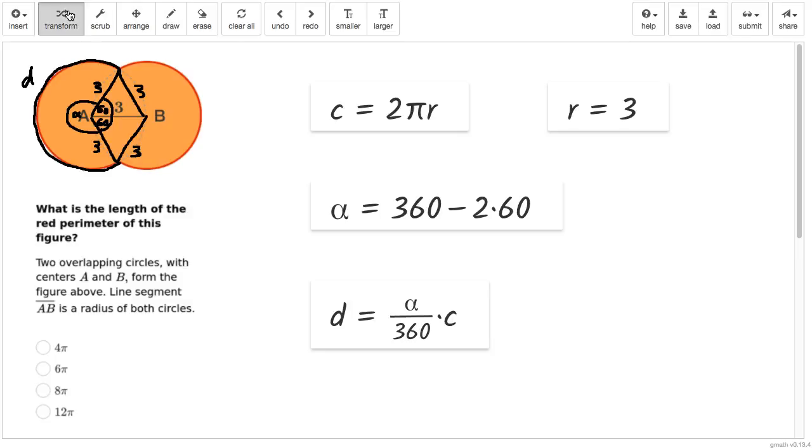And at this point, we got all the formulas down we need, and we can go forward to calculate the result. So let's first substitute in our R here. So 2 pi times 3 is the circumference.